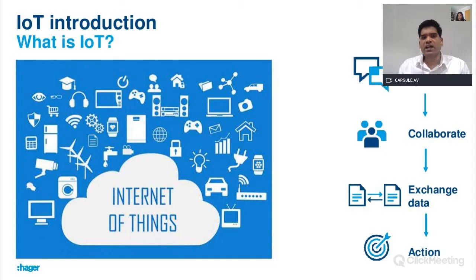So what is IoT? IoT means Internet of Things. IoT is a network of smart devices connected through the internet so that they can interact, collaborate, exchange and analyze data to take intelligent decisions without machine or human interaction.